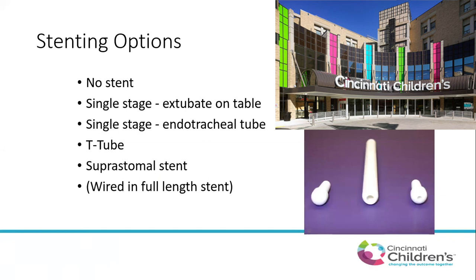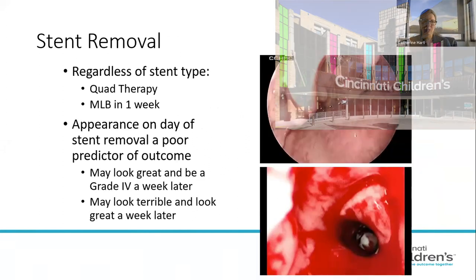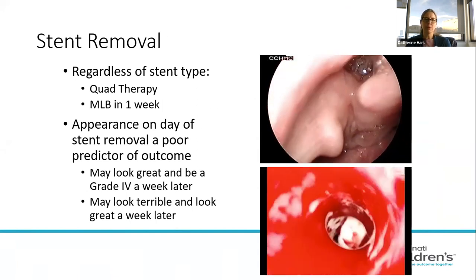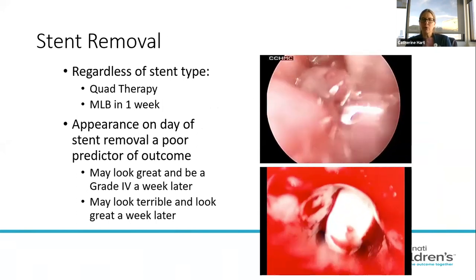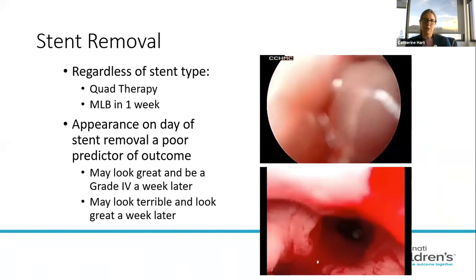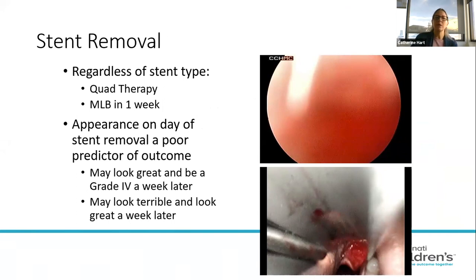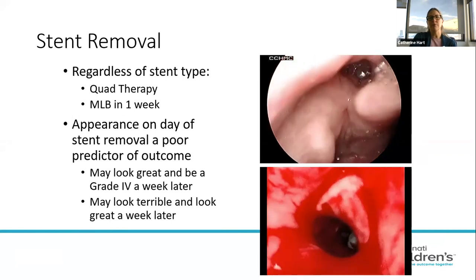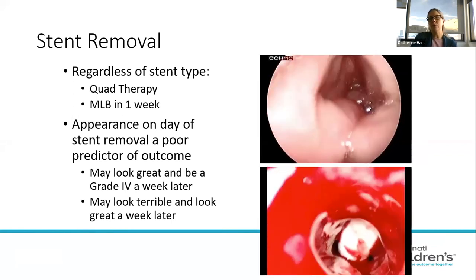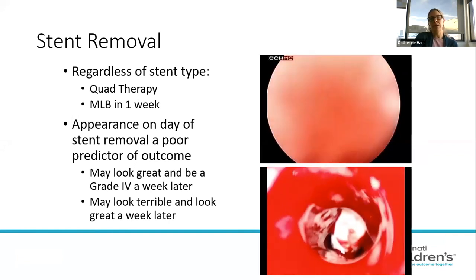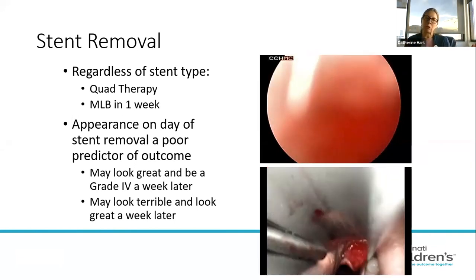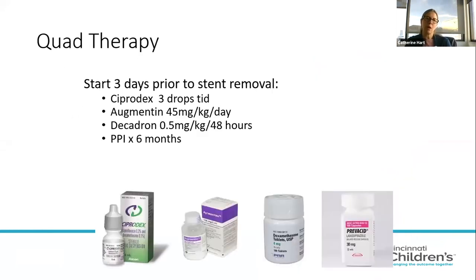For stenting options: in single stage procedures you can extubate right away or leave the child intubated using an endotracheal tube for a period of time. In double stage procedures, you can leave a T-tube in place or use the suprastomal stent. Regardless of stent type, we always use quad therapy and perform endoscopy one week after stent removal. The reason: a patient a week after stent removal can have so much granulation tissue it's effectively a grade four stenosis — so what it looks like on stent removal day is not what matters.